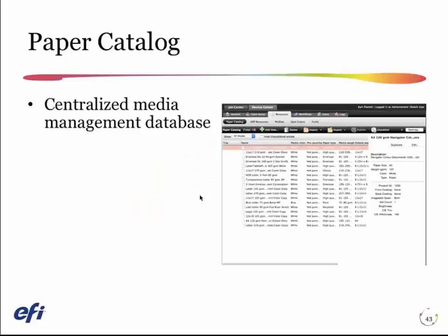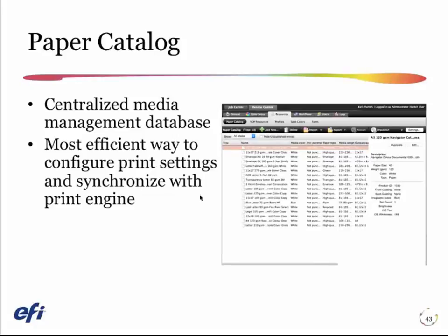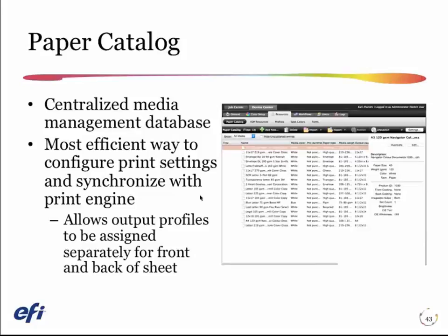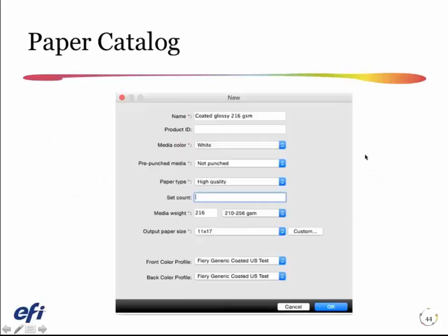The last and most sophisticated way to do this on the Fiery is to use the paper catalog. The paper catalog is a centralized media management database. It's the most efficient way to both configure print settings for the paper and, in many cases, you can synchronize it with the press so that when you load the heavy-coated paper in the press, you pick the paper catalog entry at the LCD screen where you're loading the paper, and that automatically tells the press that a particular tray or deck has the heavy-coated. If I look at the Fiery paper catalog and look into one of these settings, you'll see that part of the setting is to assign the output profile — the front color profile and the back color profile. Paper catalog is also the only way to specify different profiles and calibrations for the front and back of the sheet.